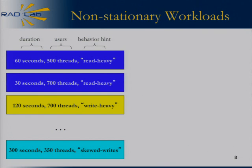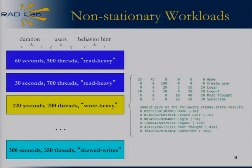To construct non-stationary workloads, you divide a benchmark run into intervals, where an interval is a simple triple. The main components are: how long the interval runs, the activity level in terms of threads or emulated users, and a behavior hint. A behavior hint can be expressed as a mixed matrix — for example, for Scatter we have some notion of reads versus writes. You can be as specific or general as you want with behavioral hints, since only your generator needs to understand them.